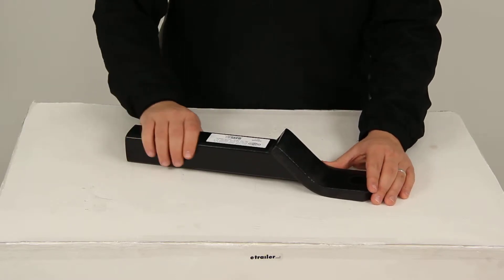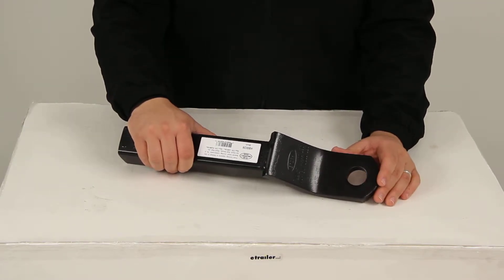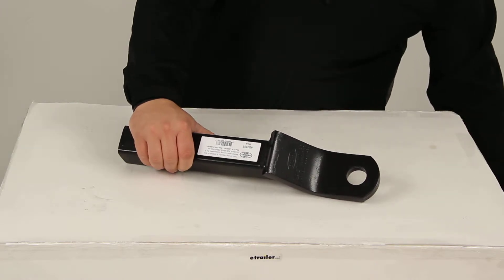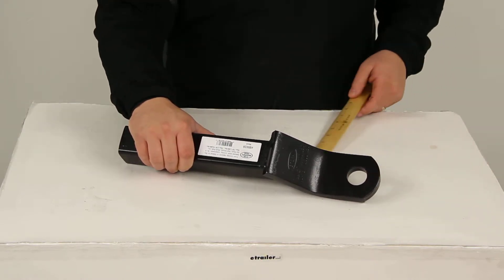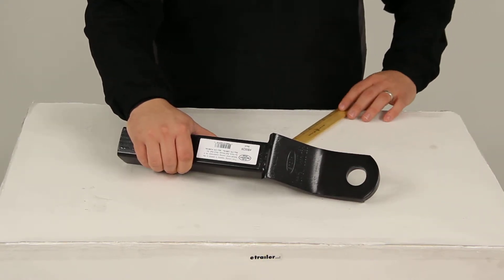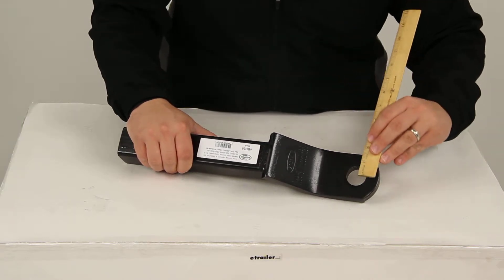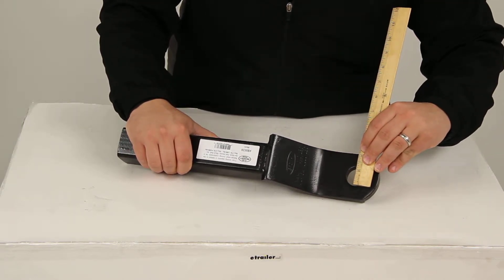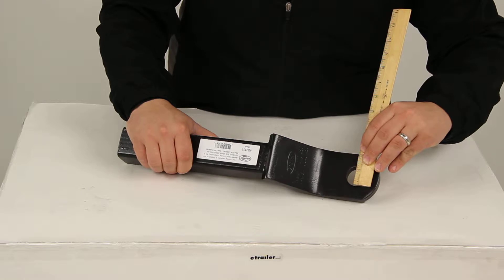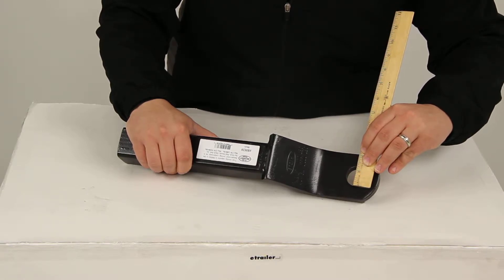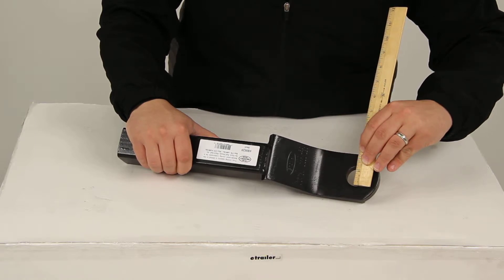It does have a really nice finish on it so it is going to help it stand up well against rust and corrosion. Now when choosing a hitch ball or accessory that has a shank that would mount into our ball hole, we want to make sure that we do not exceed our ball hole diameter, which for our application today we have one and one quarter of an inch in diameter when it comes to measuring our ball hole.